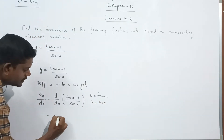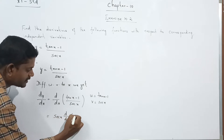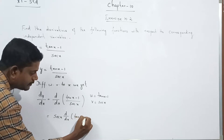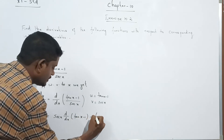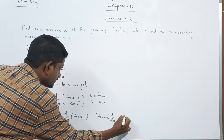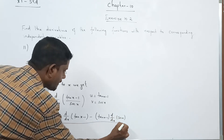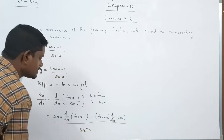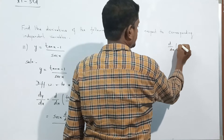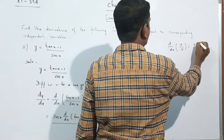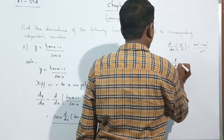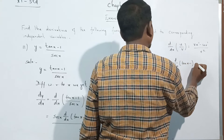So what do we do? We apply the u by v quotient rule formula. sec x times d/dx of (tan x minus 1), minus (tan x minus 1) times d/dx of sec x, all divided by sec²x. This is the u/v formula: (v·u' - u·v') / v².